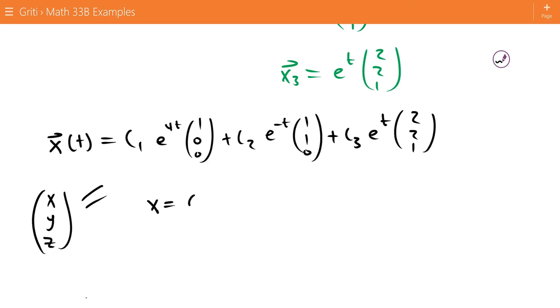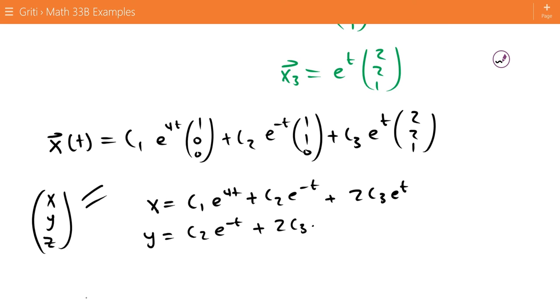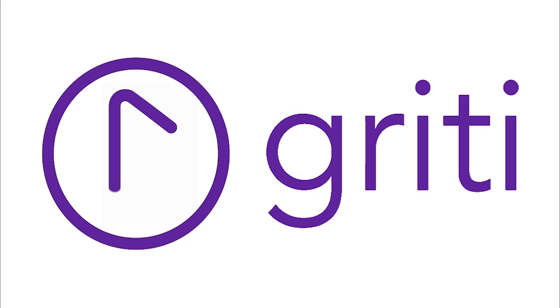And if you want to put this back in terms of what we had before, remember this equals XYZ. So X equals C1 e to the 4t plus C2 e to the negative t plus 2C3 e to the t, Y equals C2 e to the negative t plus 2C3 e to the t, and Z equals C3 e to the t, and this is our solution.